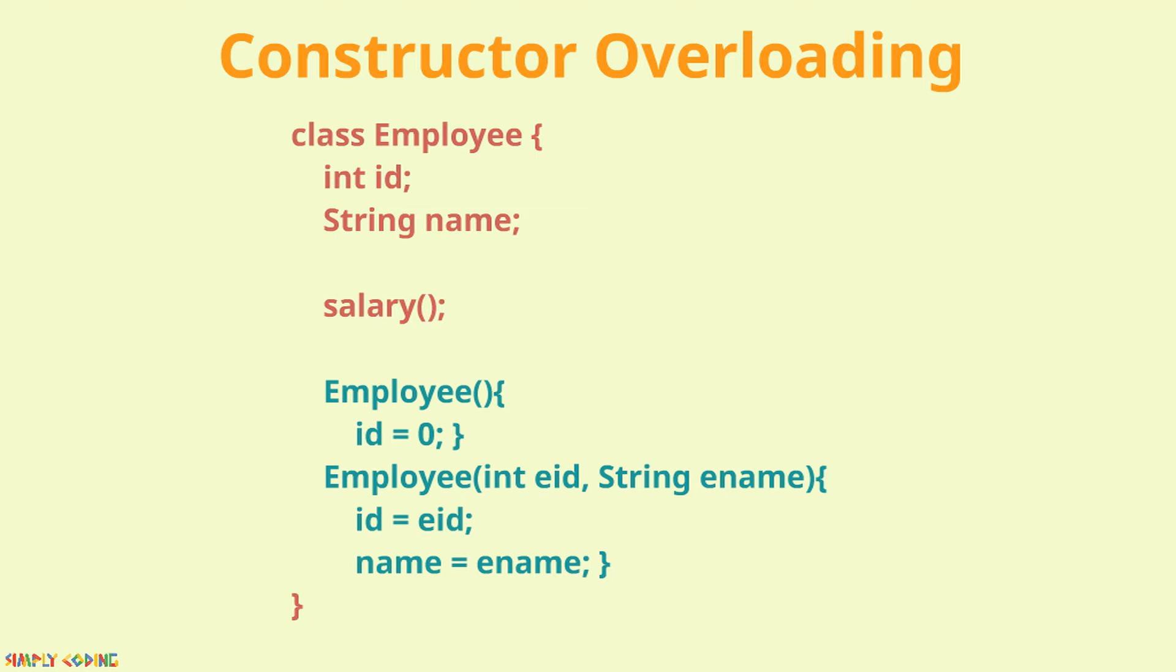Since the constructors in a class all have the same name as a class name, their signatures are differentiated by their parameter lists. Like in the example here, we have both parameterized and default constructors.